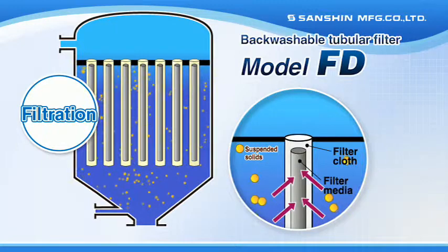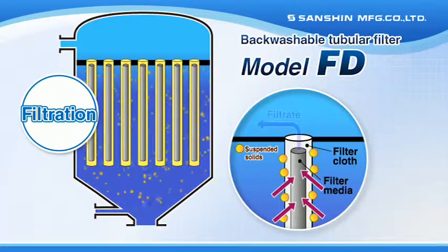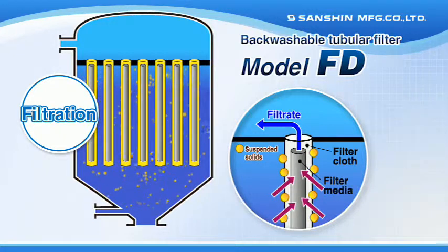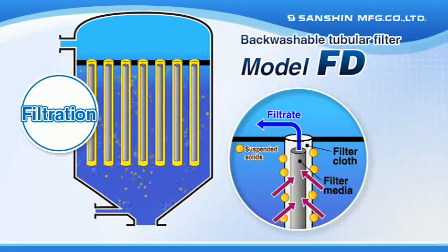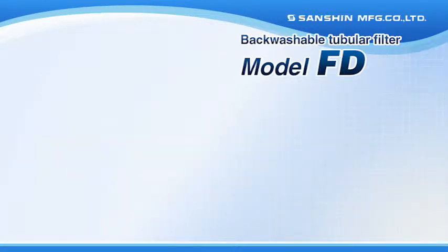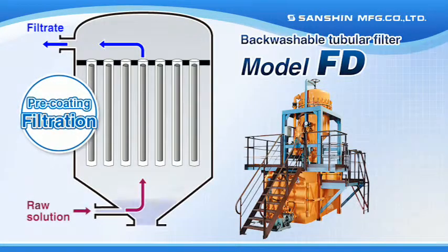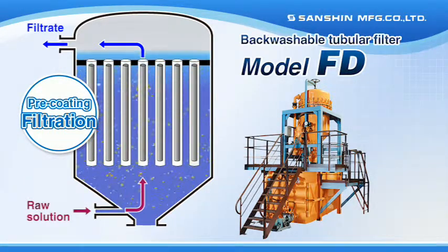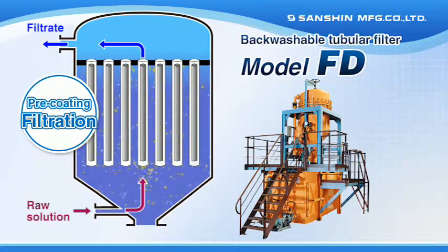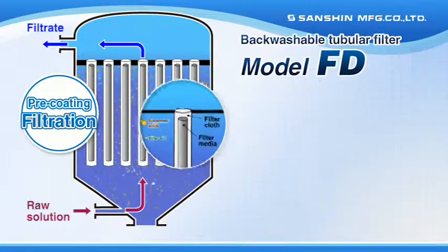Raw solution is introduced from the bottom of the filter, suspended solids are separated at the filter cloth surface, and filtrate is taken out from inside the filter media via the upper filtrate chamber. By releasing raw solution and filter aid suited to the application, filter media clogging is rare, resulting in a high-clarity, stable pre-coating filtration process.